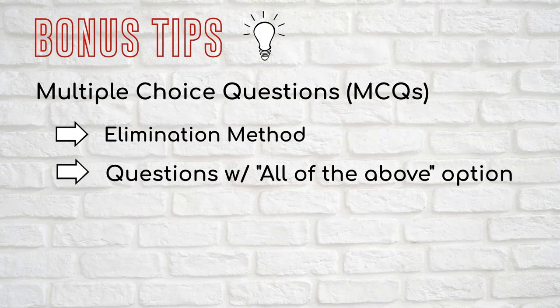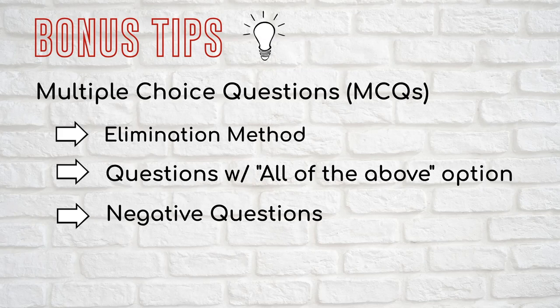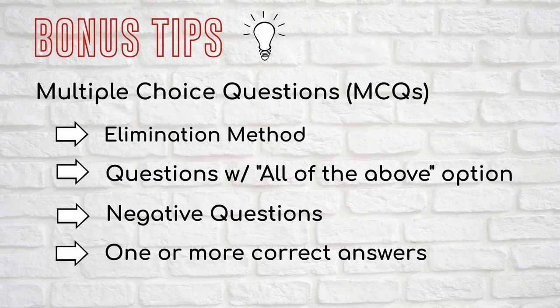Second tip: for questions with an 'all of the above' option, analyze each option first. If you can verify two options and 'all of the above' is also a choice, there is a high chance it is the correct answer. Third tip relates to negative questions — you may encounter questions where the correct answer is the exception, with words like 'not,' 'except,' 'false,' and 'least.' The correct answer is the outlier among the options. The last tip relates to questions requiring one or more correct answers — analyze each option to determine the correct combination.